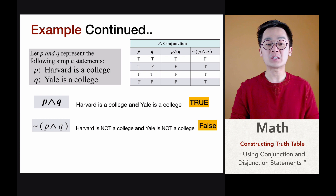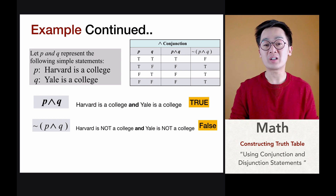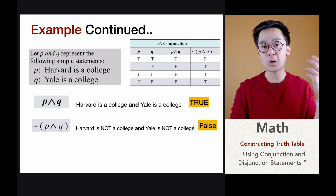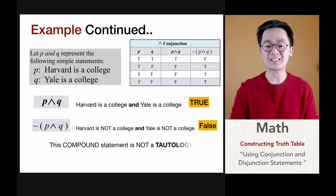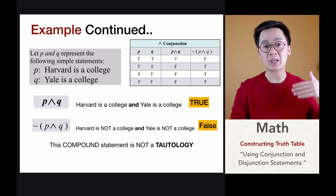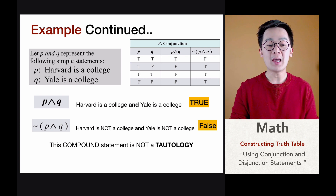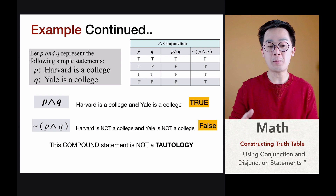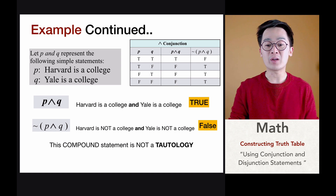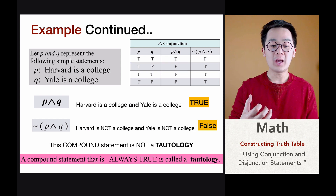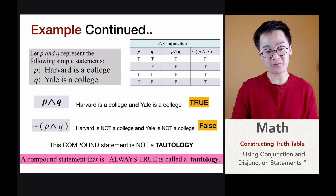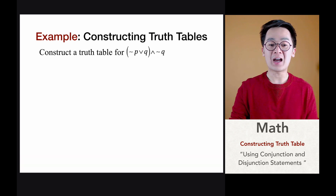There's a special case called a tautology — a compound statement that is always true. This compound statement is not a tautology because p and q is true, but its negation, not(p and q), is false. Since it's not always true, it does not qualify as a tautology.